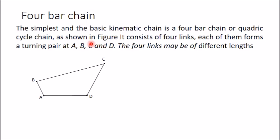The simplest and basic kinematic chain is a four-bar chain or quadratic cycle chain. It consists of four links, each forming a turning pair — four turning pairs total at A, B, C, and D. When one of the links of a kinematic chain is fixed, that chain becomes a mechanism. If you fix different links, you get different mechanisms, and these are all called inversions of a kinematic chain.